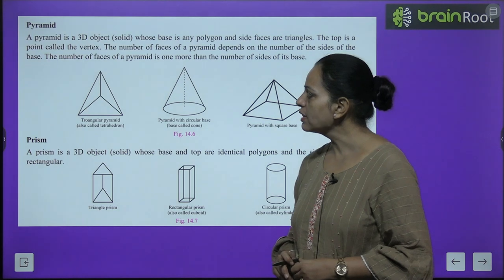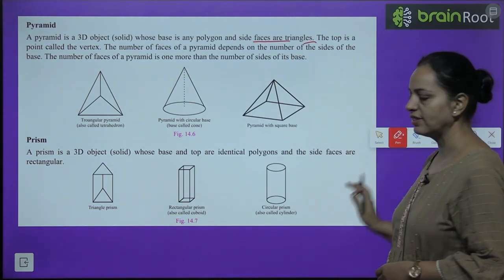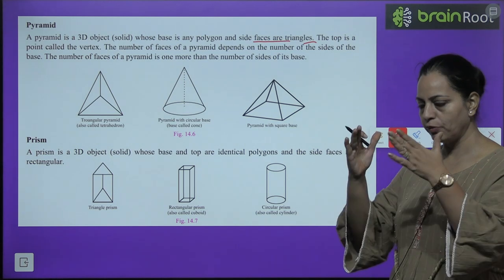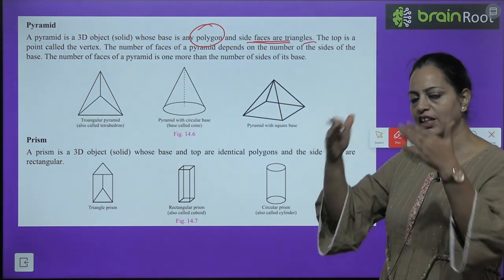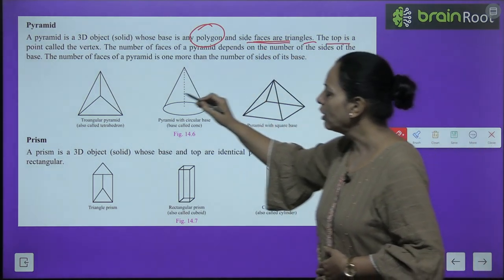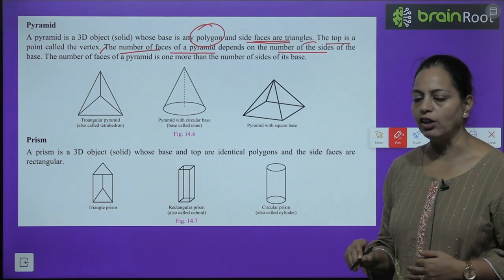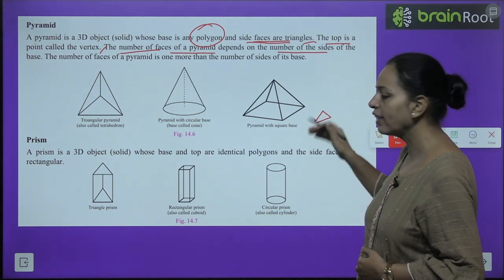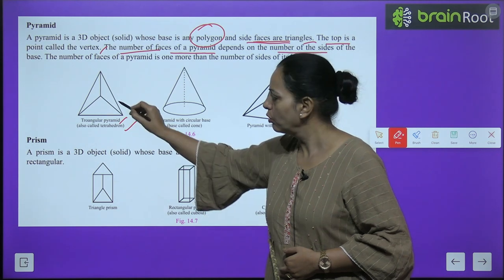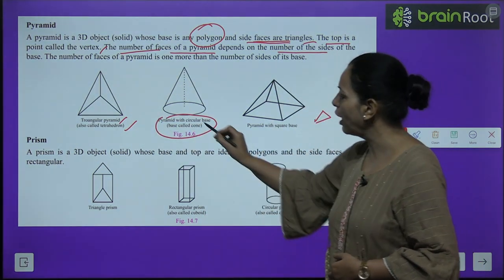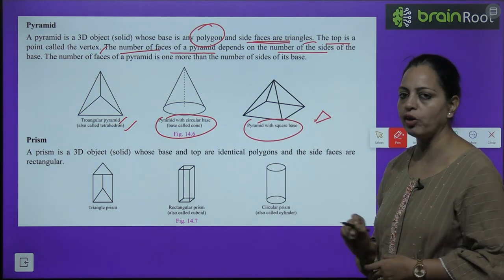Pyramid: A pyramid is a 3D object solid whose base is any polygon and side faces are triangles. The top is a point called the vertex. The number of faces of a pyramid depends on the number of sides of the base. For example, here we have a triangular pyramid where the base is a triangle. In this one, a pyramid with circular base - the base is a circle. Pyramid with square base - the base is a square.